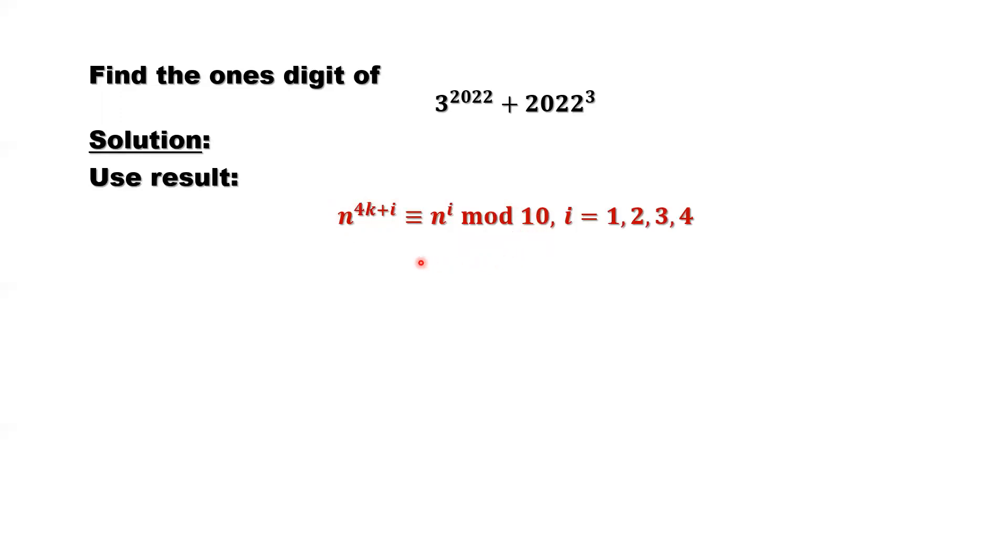The whole meaning is any number divided by 10. For example, this number and this number divided by 10, they have the same remainder. Divide by 10 means the same thing: remainder and the one's digit. So here, n to the power 4k plus i and n to the power i have the same one's digit.